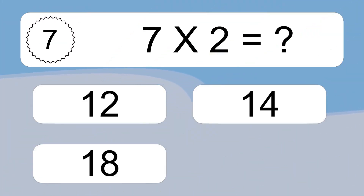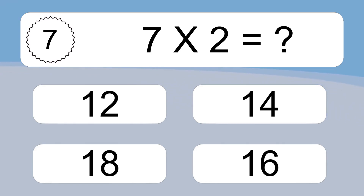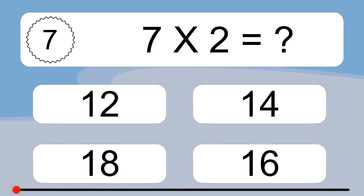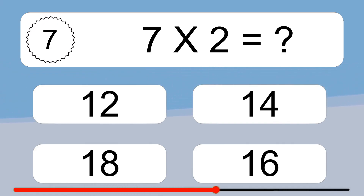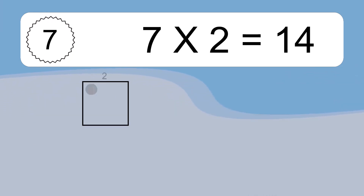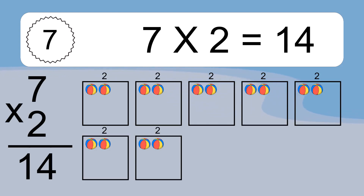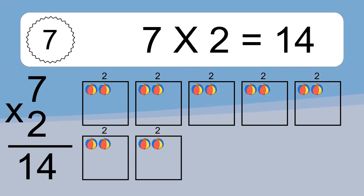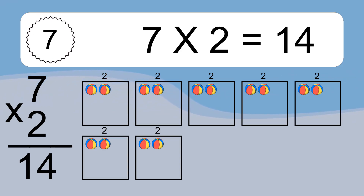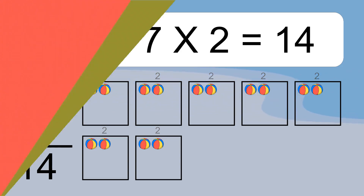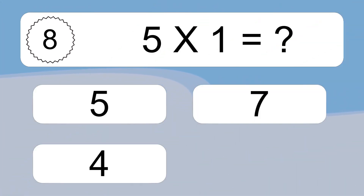7 times 2 equals what? 7 times 2 equals 14. We have 7 boxes and each box has 2 colorful balls inside. If you count all the balls in all the boxes together, you will have 7 times 2 balls. This equals 14 balls.